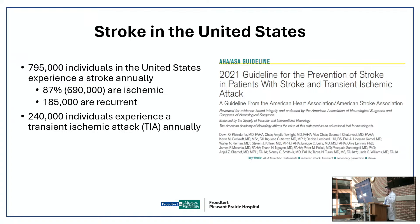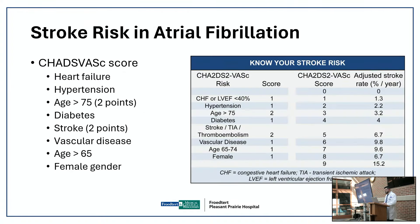Stroke from atrial fibrillation can be an acute clot causing dead brain tissue, or a mini-stroke called a transient ischemic attack. About a million people in the US per year have one of those. We use a calculator to assess a patient's stroke risk from atrial fibrillation and decide whether they need blood thinners. Females with a score above 3 need blood thinners; males with a score above 2 need them. Options include Eliquis, Xarelto, and Coumadin.